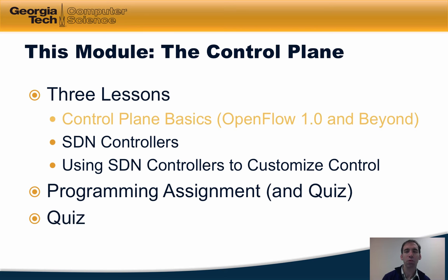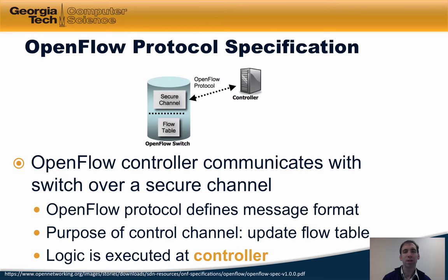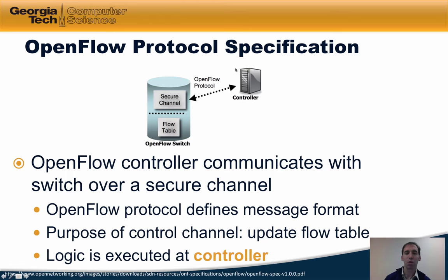Let's jump in and explore some of the control plane basics, starting with the OpenFlow protocol specification. OpenFlow separates the data and control plane: the controller speaks to the OpenFlow switch over a secure channel and instructs the switch to update its flow table entries to take different actions on various traffic flows. All of the logic for updating flow table entries resides at the controller, and the switch's job is simply reduced to forwarding traffic based on the flow table entries that the controller installs.